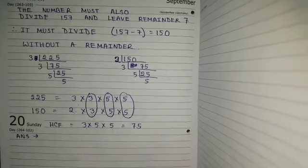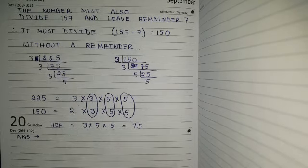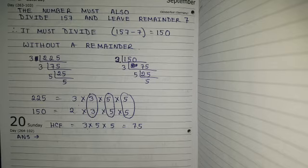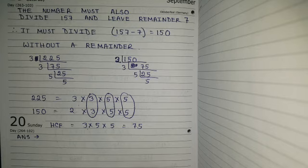So 75 is the largest number that divides 232 and 157 leaving a remainder of 7. To summarize: when finding the largest number without a remainder, just find the HCF of the given numbers. If the question says leaving a remainder of 7, subtract 7 from both given numbers first, then find the HCF to get the largest number. Thank you, children.